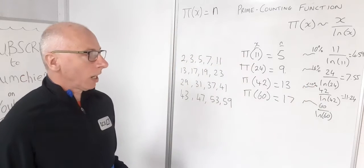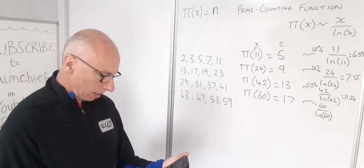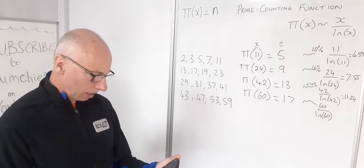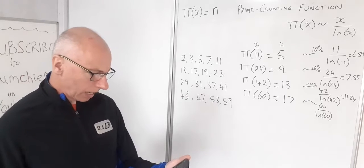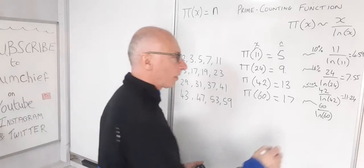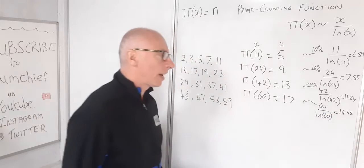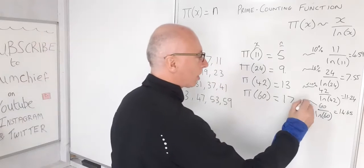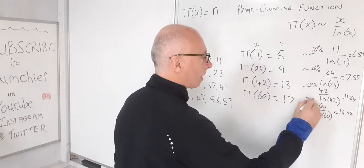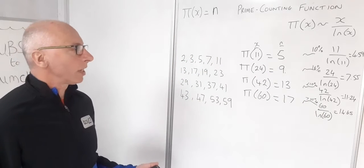And then the last one, 60 over log 60. 60 divided by log 60 gives me 14.65. So that one again is just over 2 out, so that one's just a little bit over 10 percent error value.